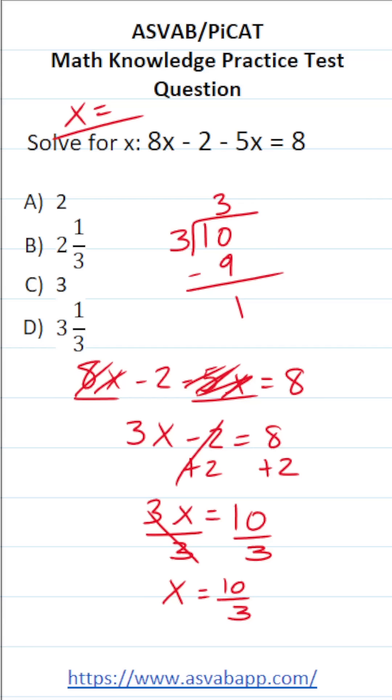Just like that, I have enough to write my mixed number. This 3 is going to be my whole number. This remainder of 1 is going to be my numerator, and this 3 is going to be my denominator. So in other words, 10 over 3 is the same thing as 3 and 1/3. So the correct answer to this one is D.